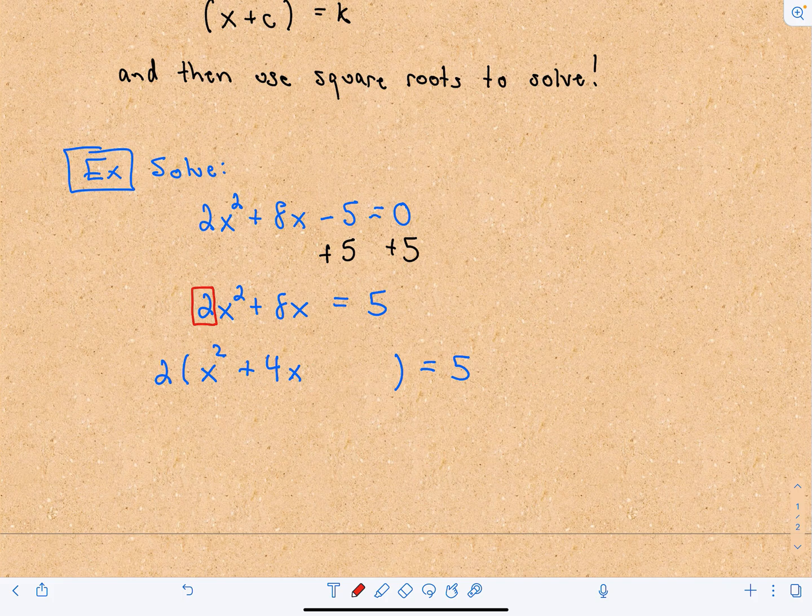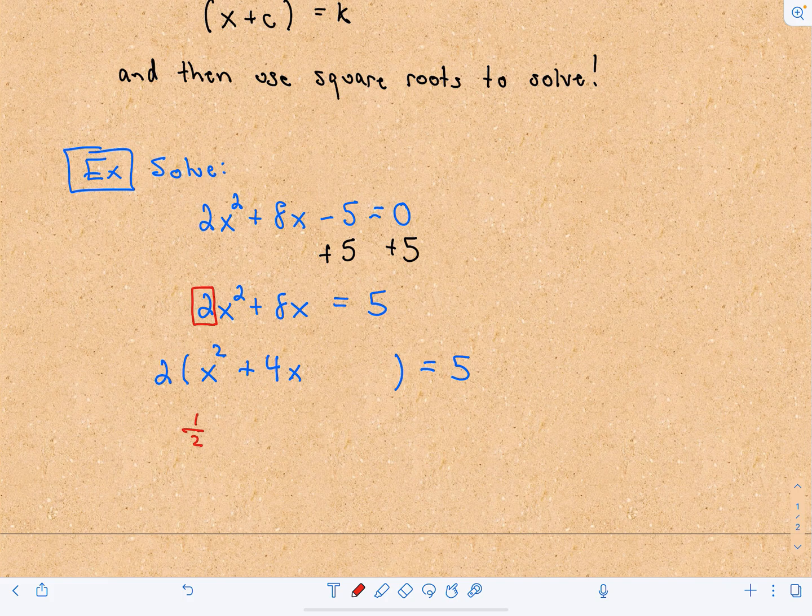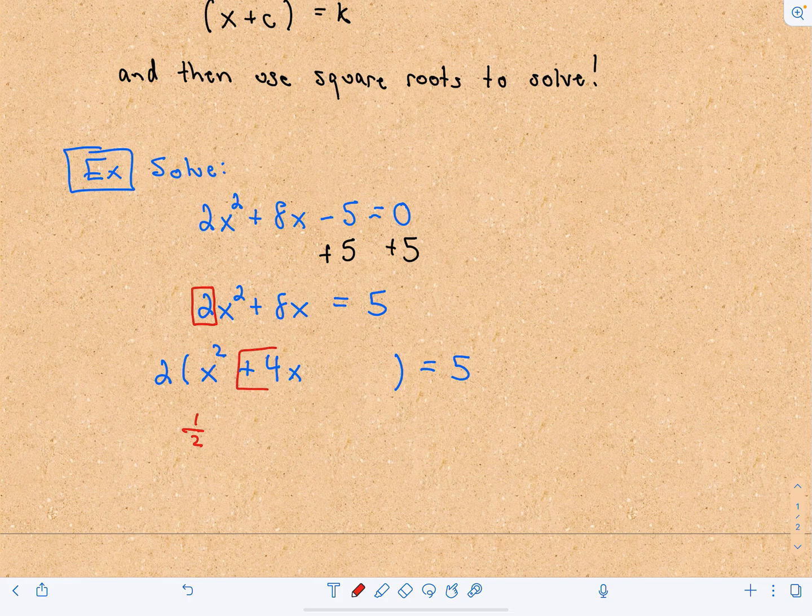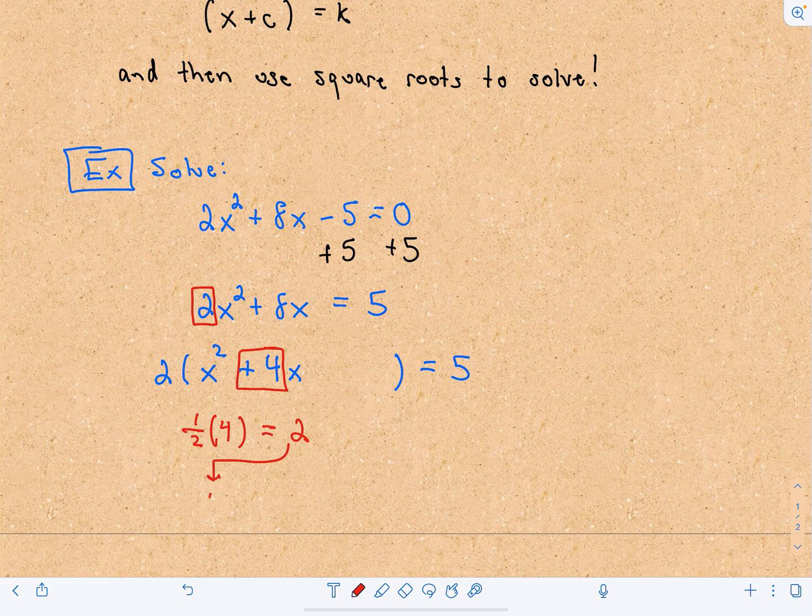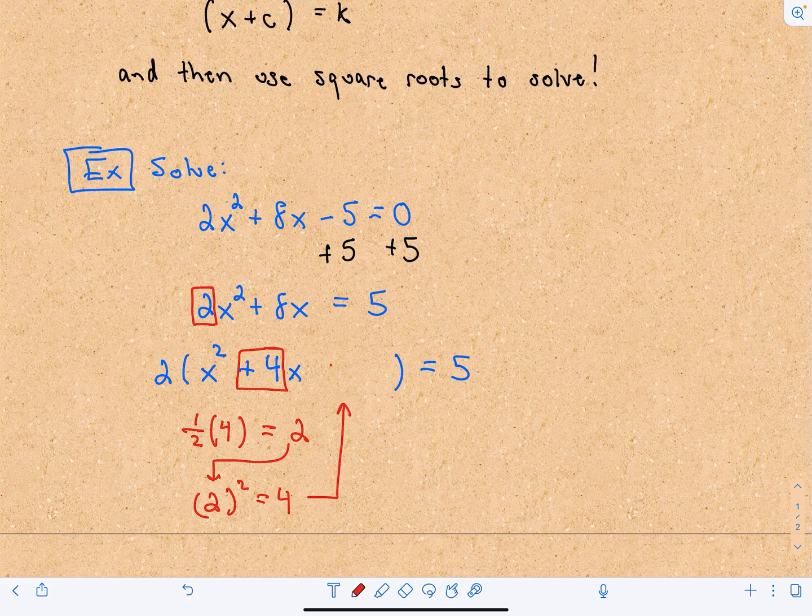The way that we do this is we take 1/2. You look at whatever number is in front of x - the number in front of x is 4. We take 1/2 of that number, which is 2. We then take that number and square it. If we square it, we get 4. So I'm going to add 4 inside the parentheses.